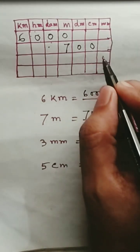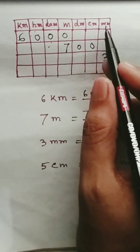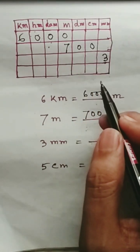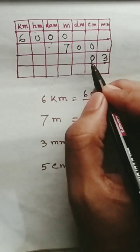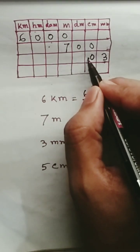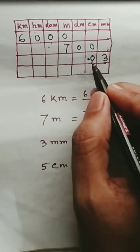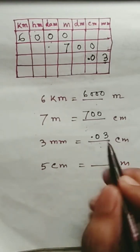Now comes three millimeters. Three millimeters to centimeters - millimeter to centimeter. Now put zero in centimeter and then decimal point: zero, three. This is the process.